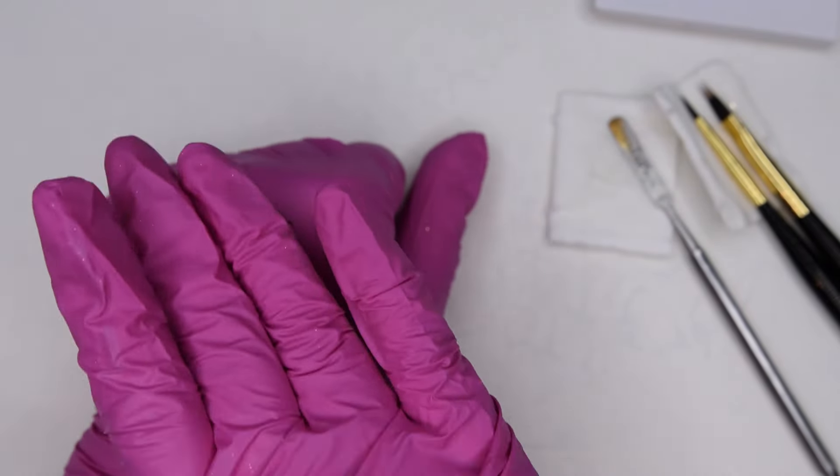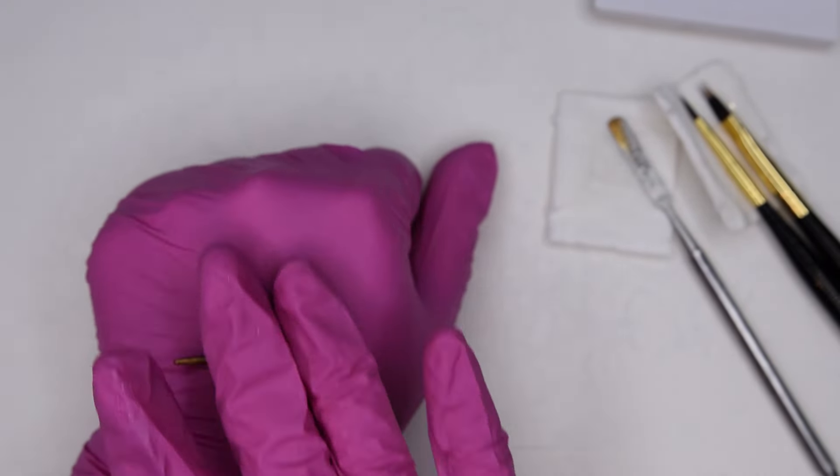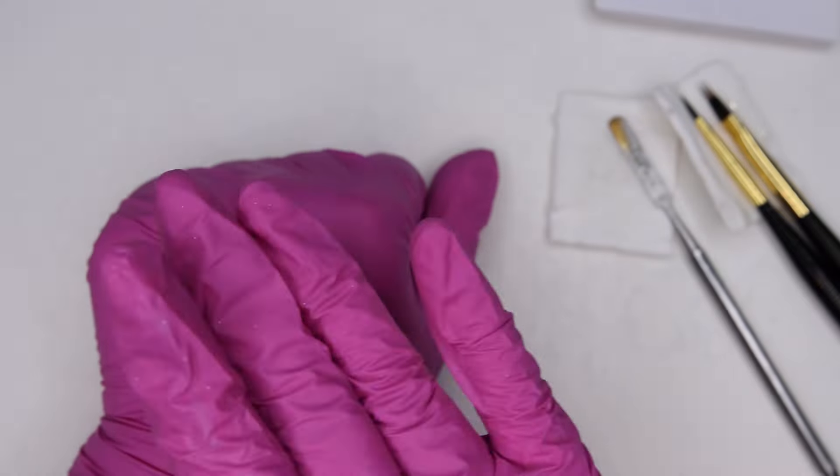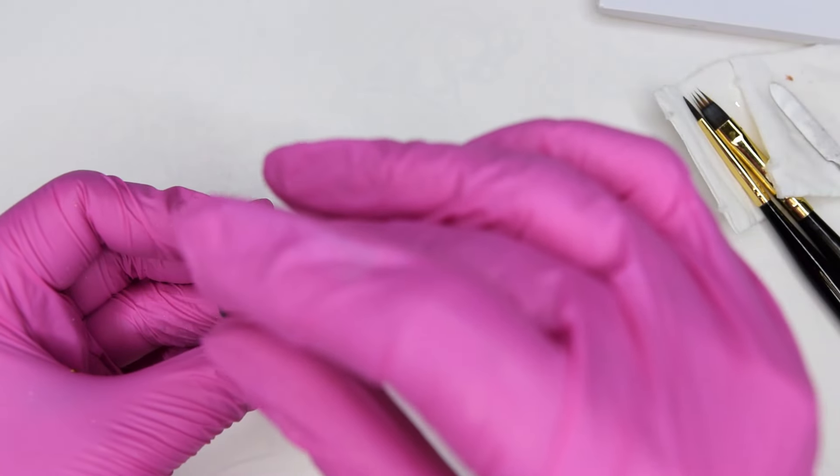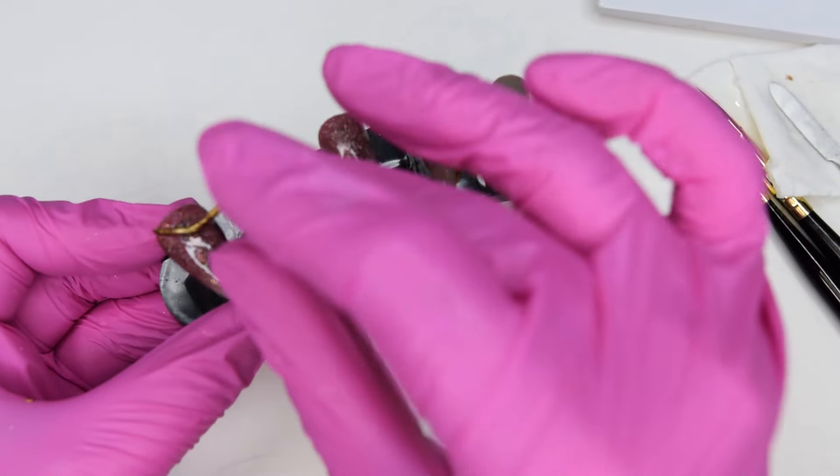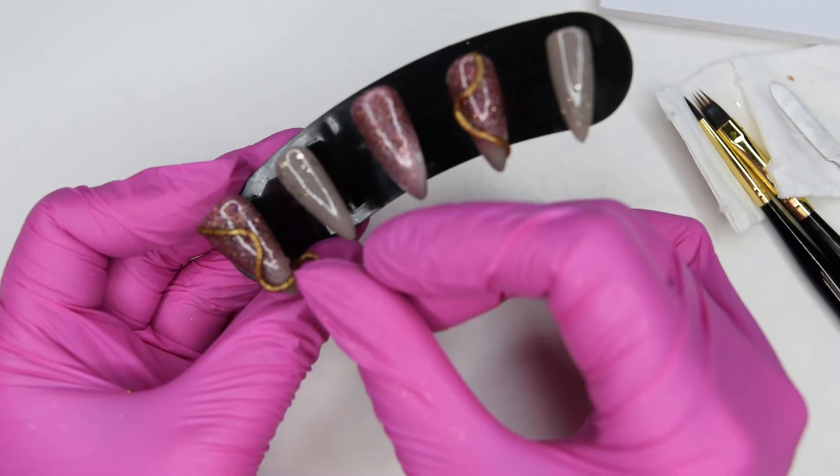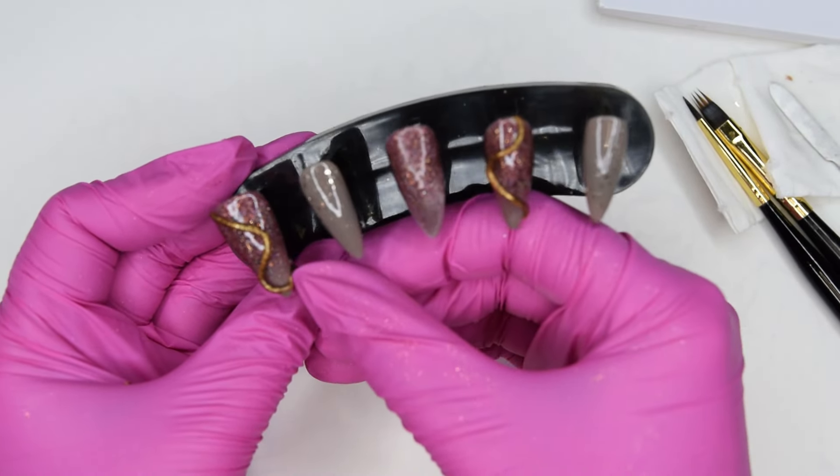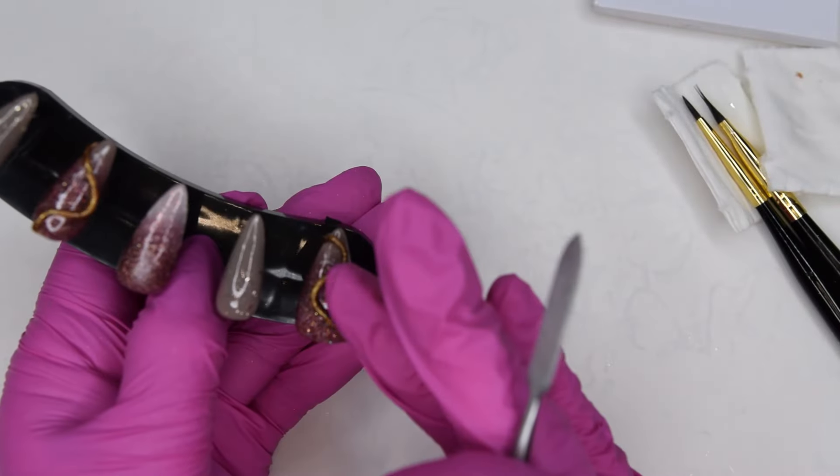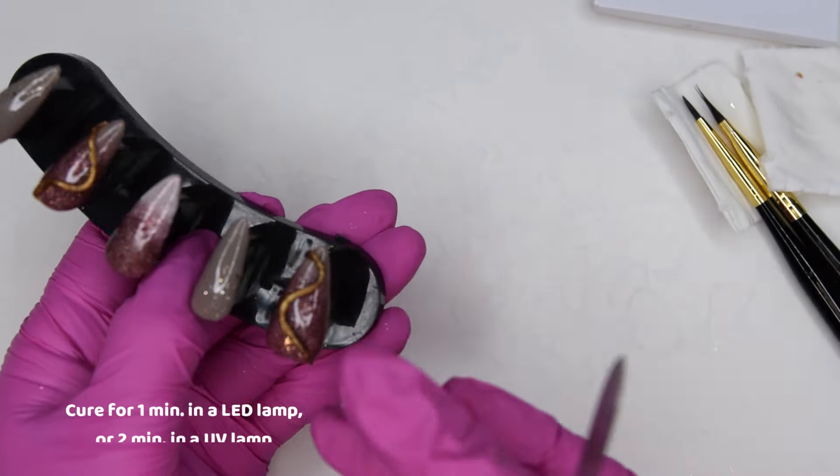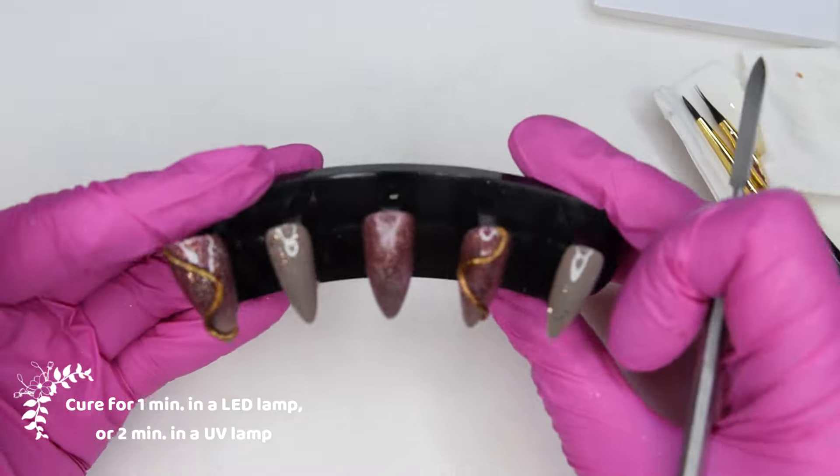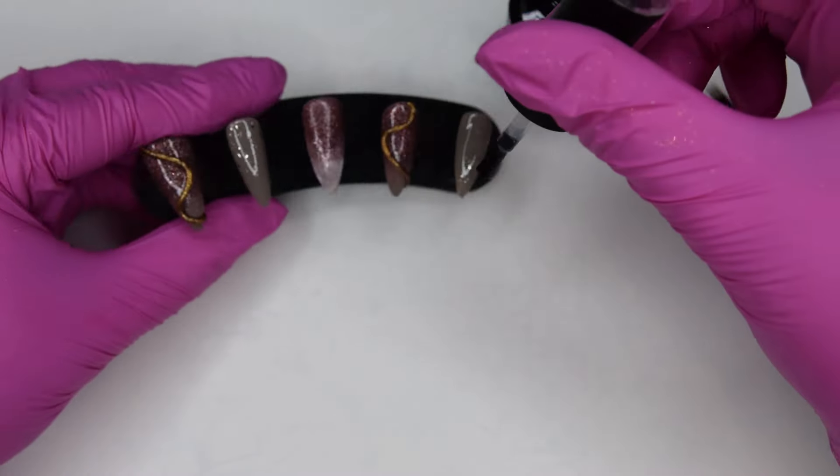When curing these make sure that you fully cure them. At least maybe for 2 minutes. Because the chrome pigment is making this gel very opaque. So it needs to be cured a little bit longer. So I made a mistake like that and under cured it. So when I pressed my tips down, it kind of squished these worms a little bit.